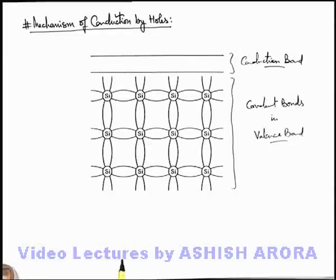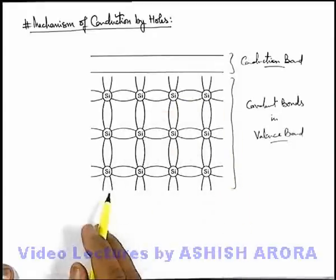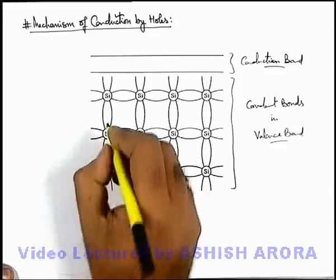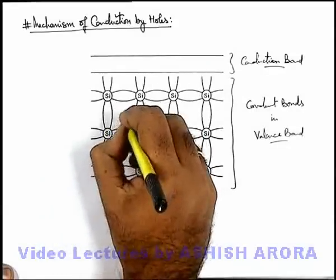We already discussed that in the covalent bonds in the valence band of the lattice structure of a semiconductor, when one electron-hole pair is generated, an electron is transferred to the conduction band.